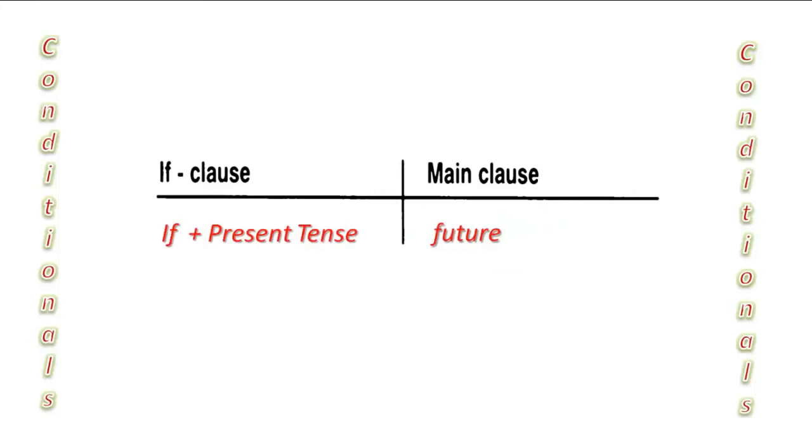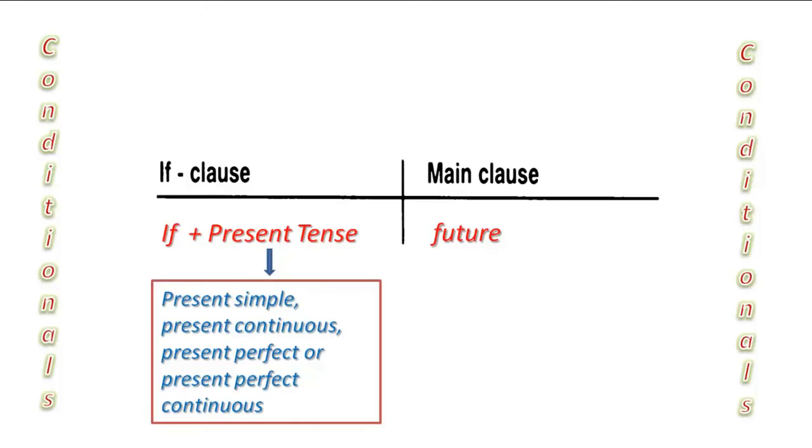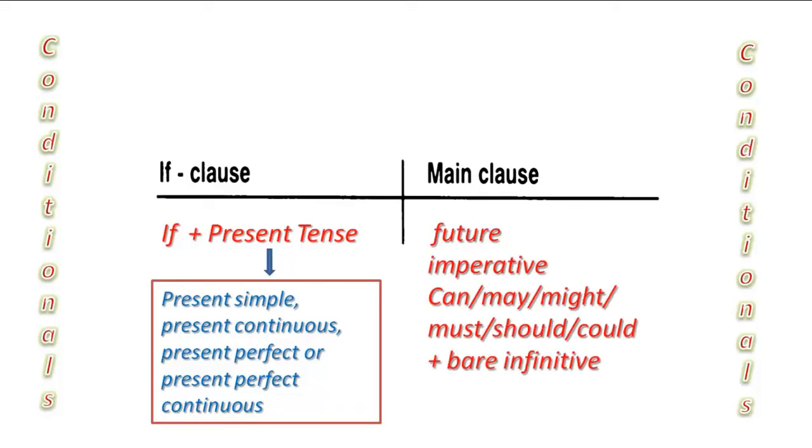In fact, I can use more than present simple in the if-clause in Conditionals Type 1. I can use any present tense in the if-clause, including the present simple, present continuous, present perfect, or present perfect continuous. And in the main clause, I can use the future or imperative, or modals like can, may, might, must, should, and could plus bare infinitive.